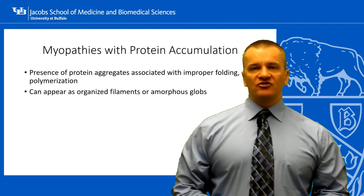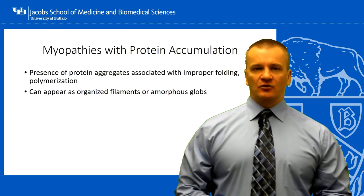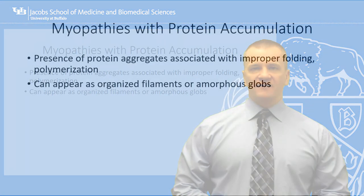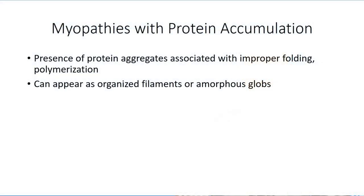The term protein accumulation myopathy is pretty self-explanatory. A variety of identified mutations lead to misfolding of muscle proteins during synthesis that result in abnormal architecture. In some instances, this creates a sticky point that causes the protein subunits to polymerize inappropriately, similar to what we see with hemoglobin in sickle cell anemia. This results in protein aggregates, which may appear as filaments representing an organized polymerization, or an amorphous blob of randomly combined proteins.